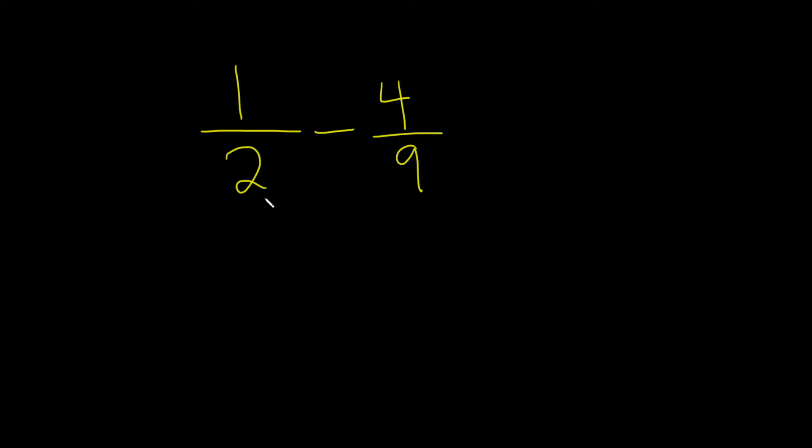So one easy way to do this is just to multiply them together. So two times nine is equal to eighteen. So our goal is to make sure there's an eighteen on the bottom in both cases. So what you do is you multiply by what's missing. So here we have a two and we want to get an eighteen. So what we'll do is we'll multiply by nine over nine.